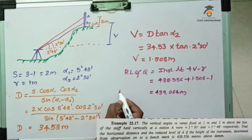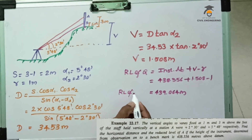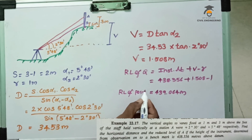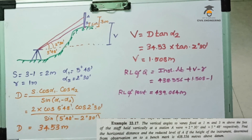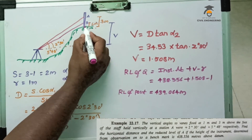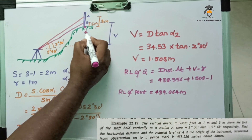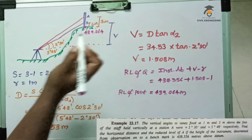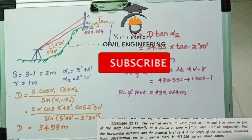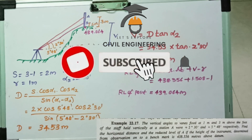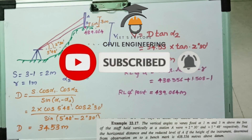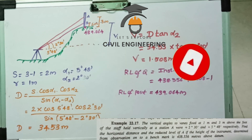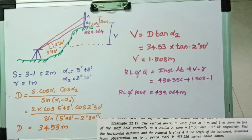So in this tangential tacheometry example problem, the RL of the unknown point Q is 439.064 meters. This completes the tangential tacheometry example problem. Please subscribe and share with your friends. Thank you.